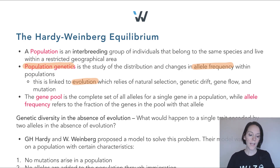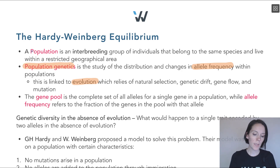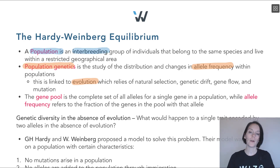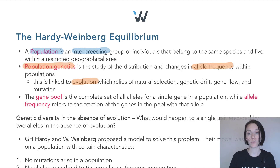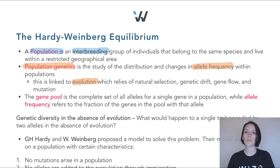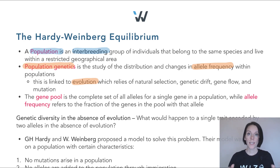So what actually is a population? A population is an interbreeding group of individuals which belong to the same species and live in the same geographical area. Think of a group of individuals which are all reproducing with each other — that is a population. We can study how allele frequency changes within a population.